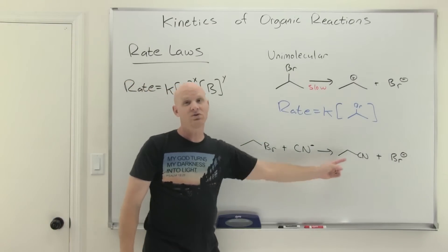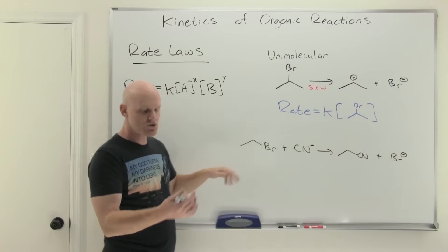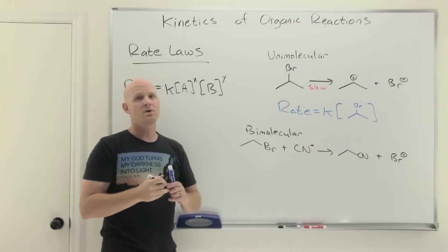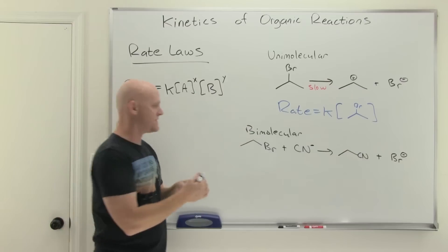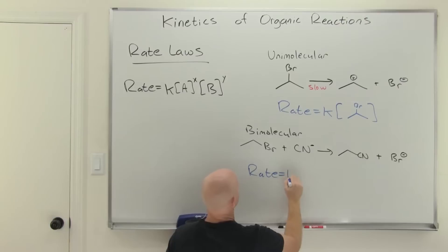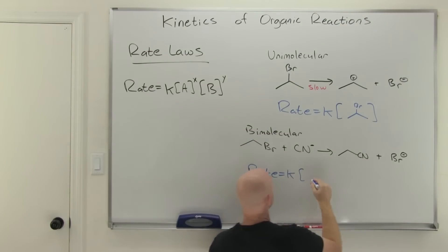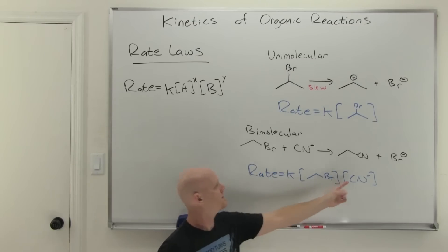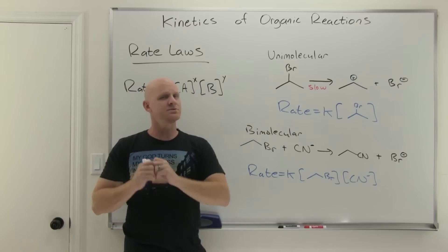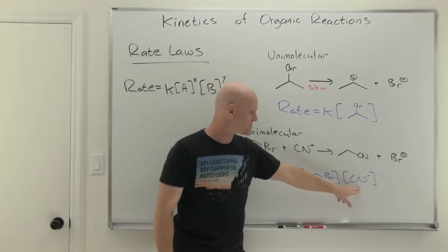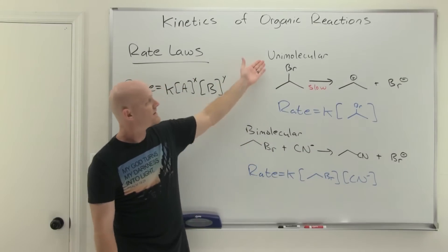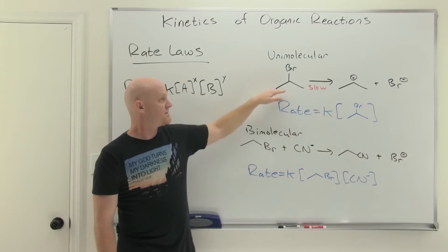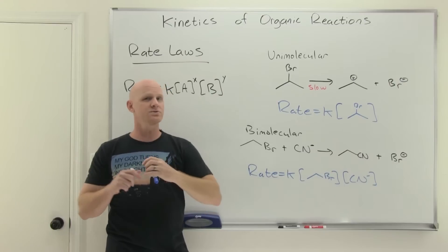For this next reaction, it's a single-step elementary reaction, but now we've got two reactants, so we refer to this as bimolecular. Overall, the rate law is going to end up being second order. We'll still have a rate constant K, but now with two reactants — one of each — they're both going to show up in the rate law first order with respect to each. First order with respect to this reactant, first order with respect to the cyanide. Your overall reaction order is obtained by adding up the individual reactant orders — so first plus first equals second order overall. For a bimolecular elementary reaction, we have a second-order rate law. This will be very relevant when we start dealing with substitution and elimination reactions.